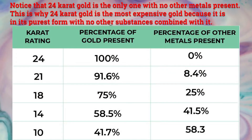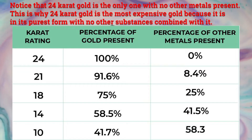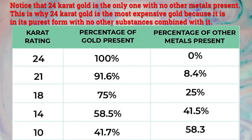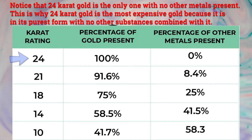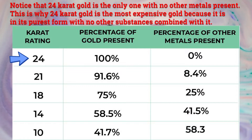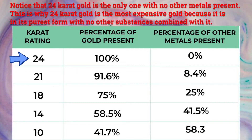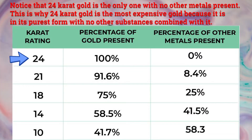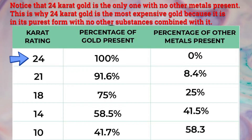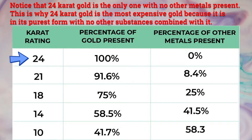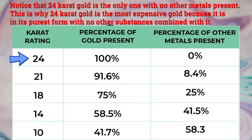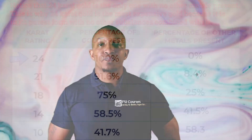Here is another chart that shows the percentage of gold present and the percentage of other metals present. Notice that 24 karat gold is the only one with no other metals present. This is why 24 karat gold is the most expensive — it is in its purest form with no other substances combined with it.